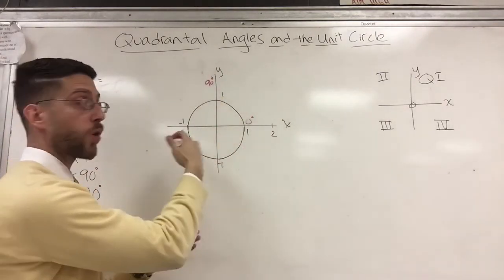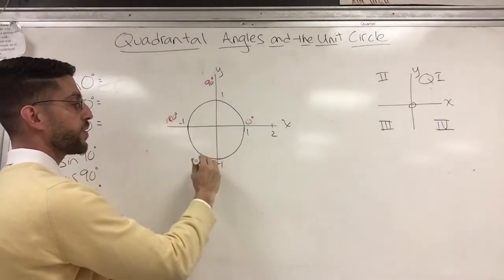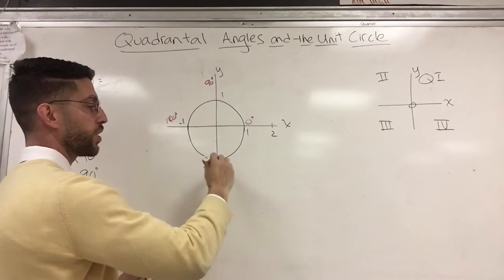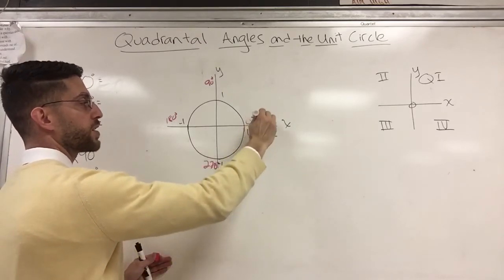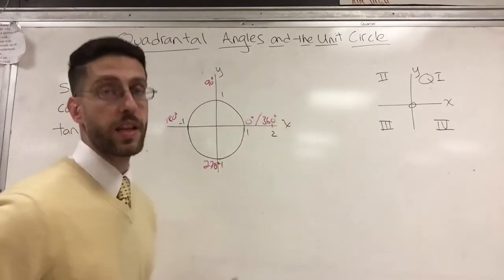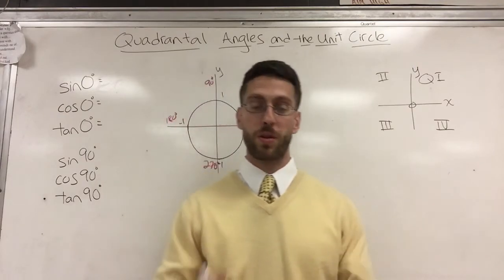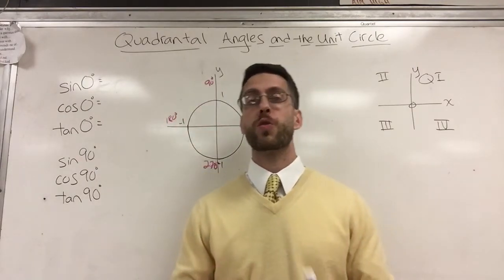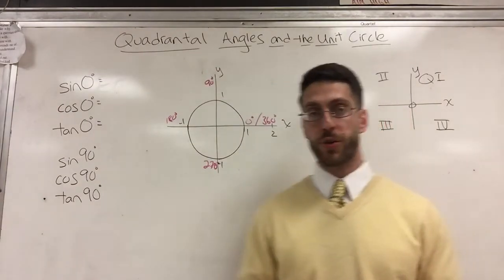180 degrees opens into a straight angle, so 180 would be here. 270 is down here. And if I continued, 360 lands in the same place as zero, so that makes it terminal. Those are our quadrantal angles. Those are the angles that don't lie in any particular quadrant.